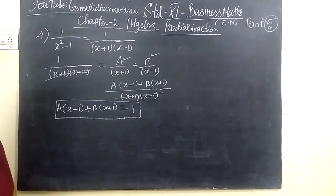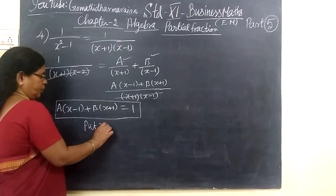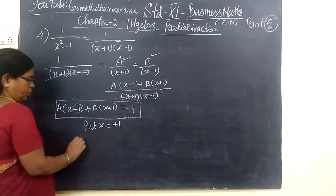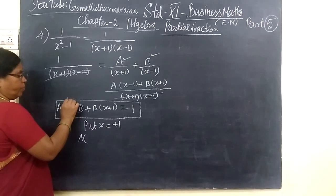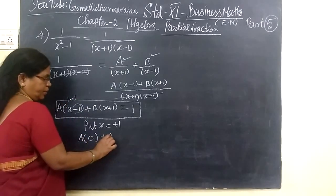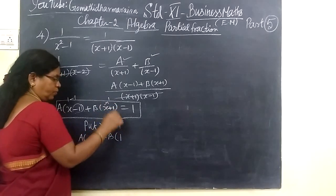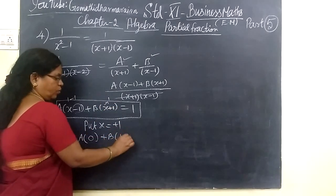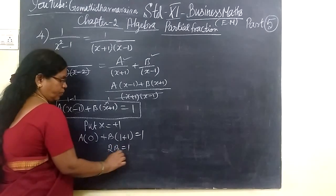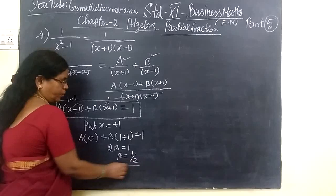This is a very interesting method. Put S equal to 1. In the S minus 1 term, you are substituting plus 1, so 1 minus 1 gives 0. So A times 0 plus B — for S you are substituting 1 — so 1 plus 1 equals 2. That is, 2B equal to 1, which implies B equal to 1 by 2.